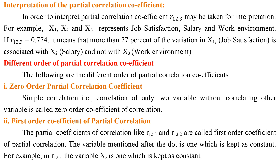Second, the first-order coefficient of partial correlation. Partial coefficients of correlation like r12.3 and r13.2 are called first-order coefficients of partial correlation. The variable mentioned after the dot is the one which is kept constant. For example, in r12.3, the variable x3 is the one kept constant.